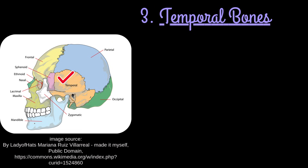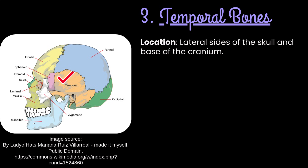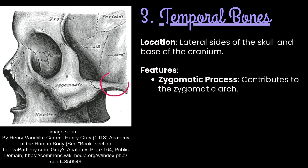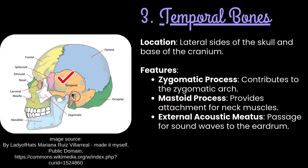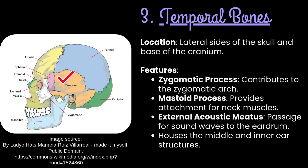Number 3: Temporal bones. They form the lateral sides of the skull and the base of the cranium. They have a zygomatic process contributing to the zygomatic arch, a mastoid process providing attachment for neck muscles, and an external acoustic meatus that forms the passage for sound waves to the eardrum. They also house the middle ear and inner ear structures.